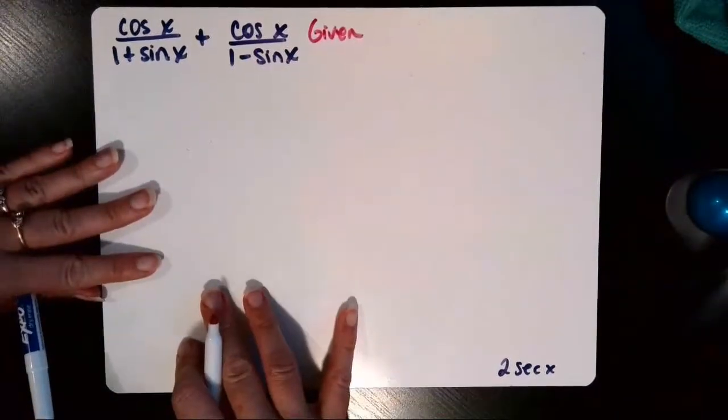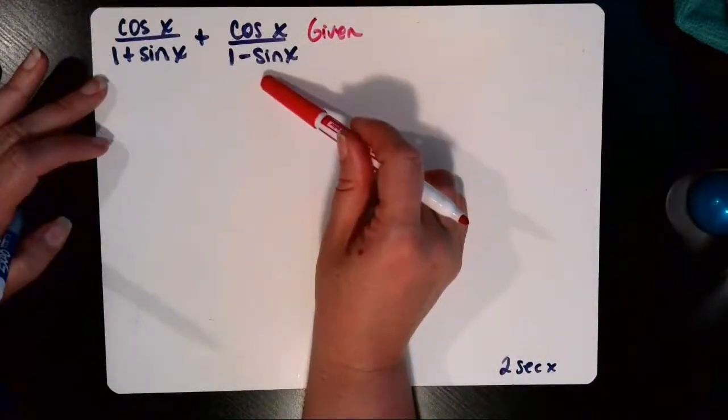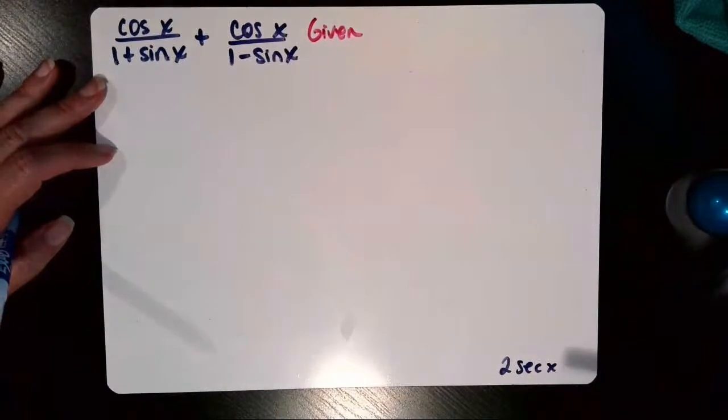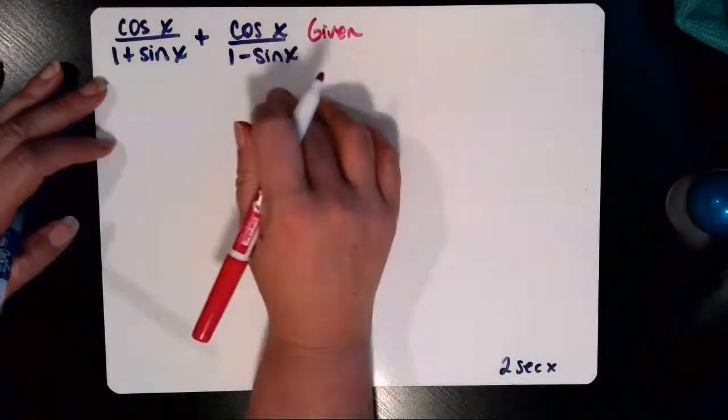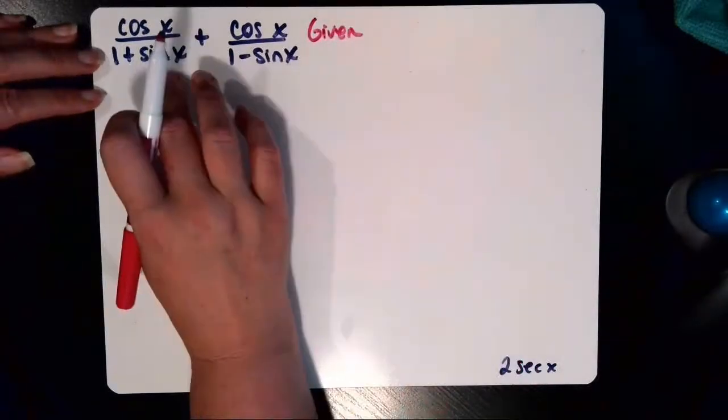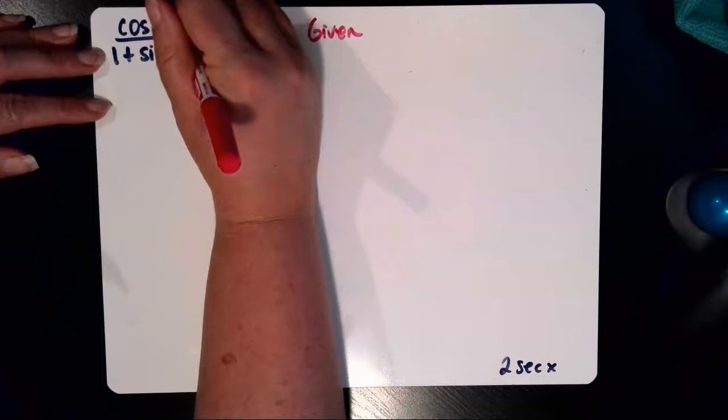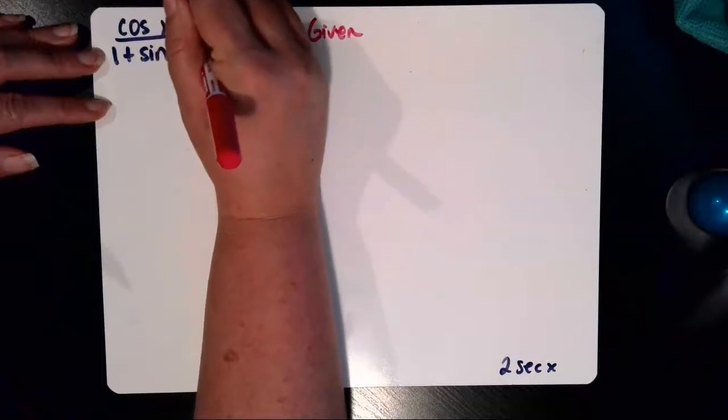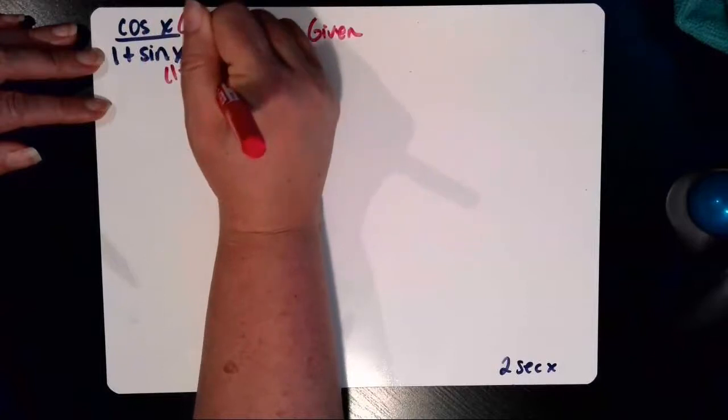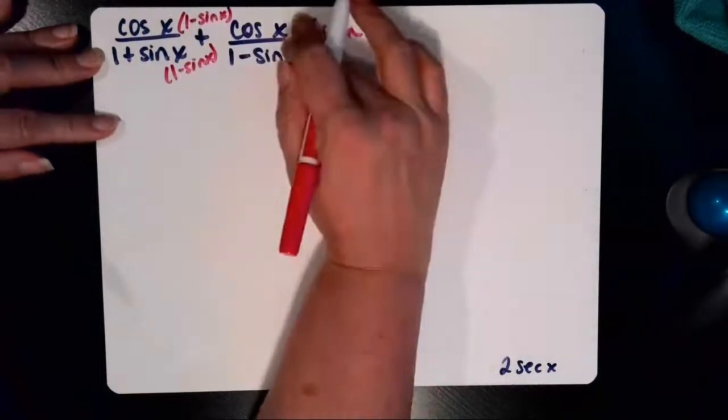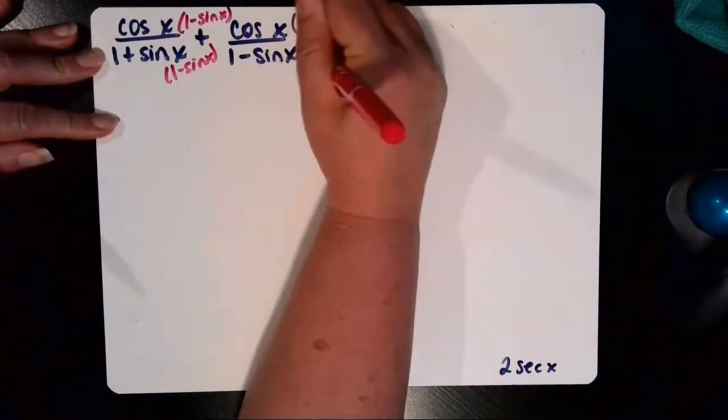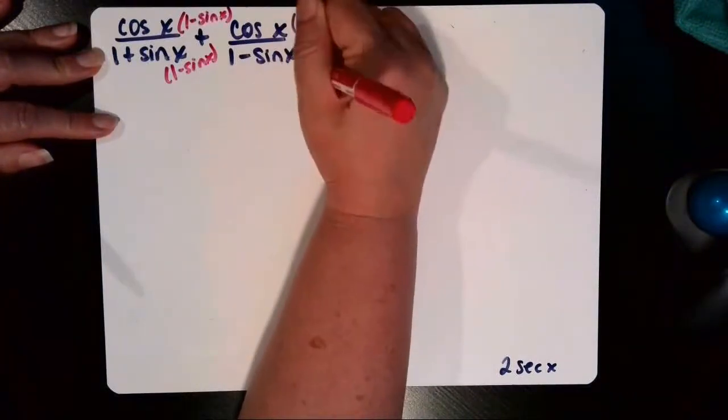Because I have two fractions being added together and I need to end up with just a single term at the end, I'm going to combine these fractions, and that would require a common denominator. So I'm going to multiply this first fraction, the top and the bottom by 1 minus sine x. And the second fraction, I'm going to multiply the top and the bottom by 1 plus sine x so that I can get that common denominator.